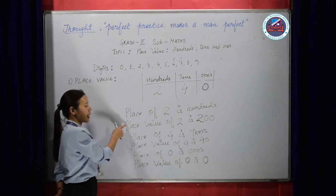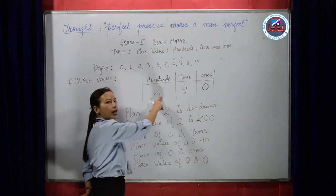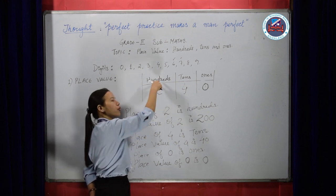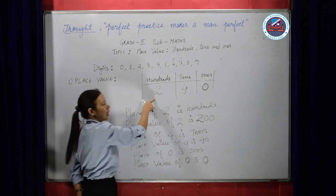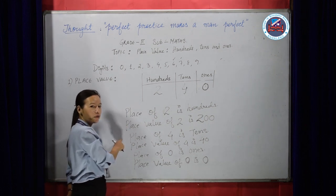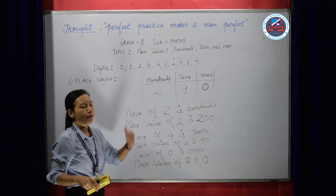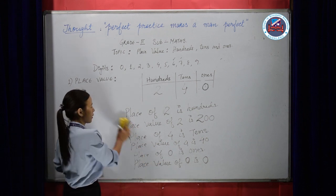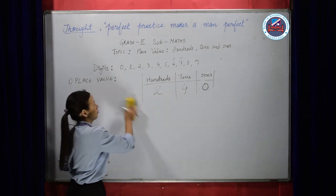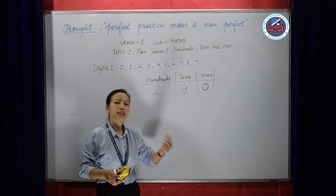I hope you have understood the difference between place and place value. I repeat: place is the position of a digit in the number — it can be in 100s, 10s, or 1s. Place value means how much the digit is worth, whether it's worth 100s, 10s, or 1s, and that is decided by the position of the digit in the number. Now let's try to find out how to count in 1s, and how to count 1 and 5 in 1s place, 10s place, and 100s place.